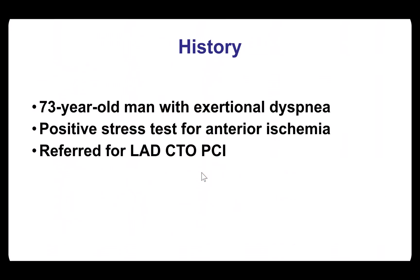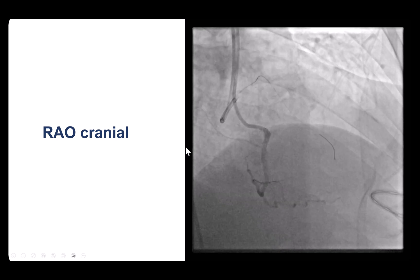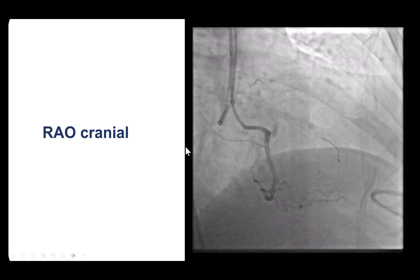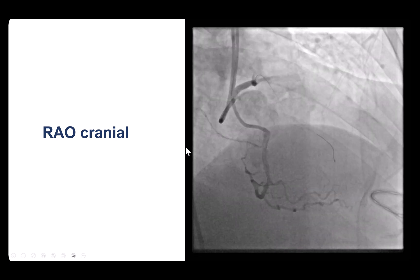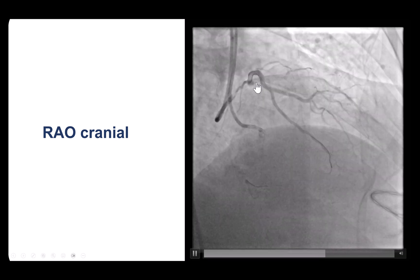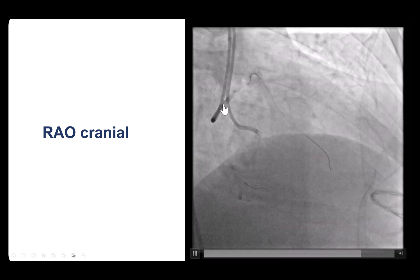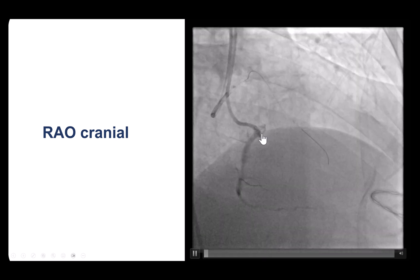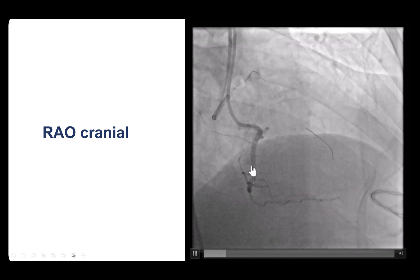Moving on to the case, this was an older gentleman who presented with exertional dyspnea. He had a stress test that showed anterior ischemia, and he was sent for PCI of an LAD CTO that was diagnosed on a coronary CT angiogram. These are the diagnostic angiography images. We have dual injection, injecting first from the donor vessel, the right coronary artery.